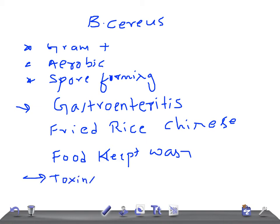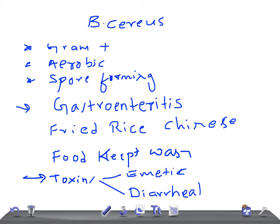The first toxin is the emetic toxin, and the second is the diarrheal toxin. The emetic toxin, as the name indicates, causes vomiting — and can also cause diarrhea. The onset is within one to six hours, which is similar to Staph aureus.